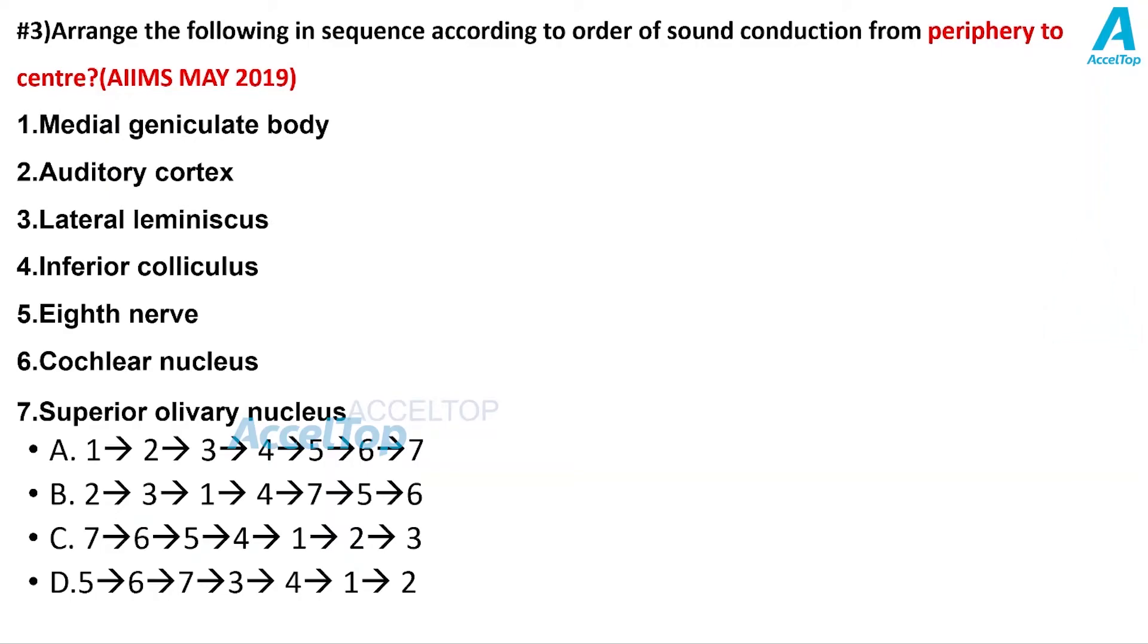We will see the recent May 2019 IAMS MCQ recent pattern MCQ in which they have given 7 options. The question is arrange the following in sequence according to the order of sound conduction from periphery to the center. Very important. First they are asking us to arrange in the order and very important to note here is they are asking to arrange from periphery to the center.